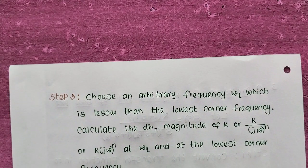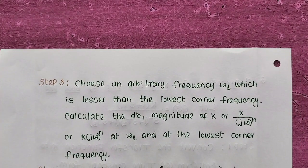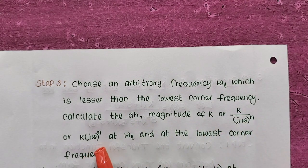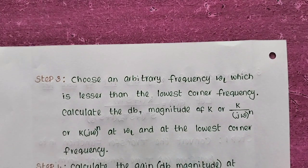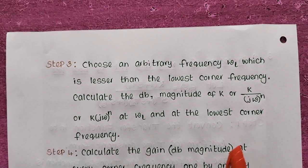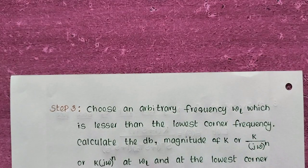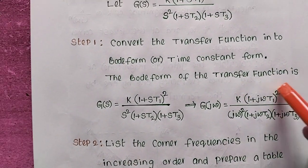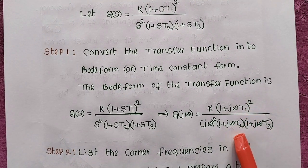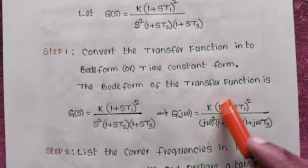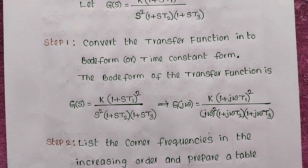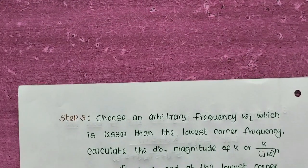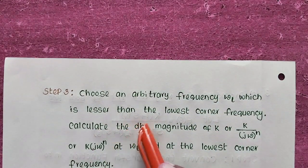Step 3: Choose an arbitrary frequency ωl which is less than the lowest corner frequency. From the transfer function, corner frequencies are 1/T1, 1/T2, and 1/T3. We identify the lowest corner frequency, then choose an additional frequency ωl whose value is less than that lowest corner frequency.